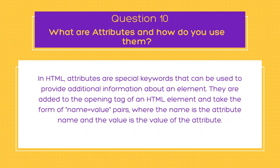The next and final question on today's list is: what are attributes and how do you use them? In HTML, attributes are special keywords that can be used to provide additional information about an element. They are added to the opening tag of an HTML element and take the form of name-value pairs, where name is the attribute name and value is the attribute's value. Attributes can be used to control the behavior and appearance of elements, such as setting the size or color of text, adding a hyperlink, or specifying an image source.